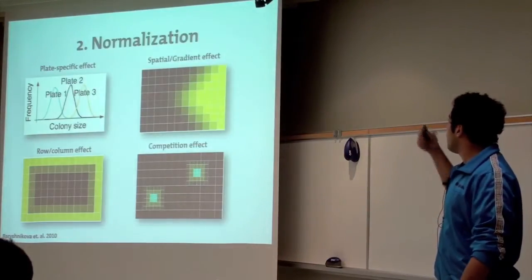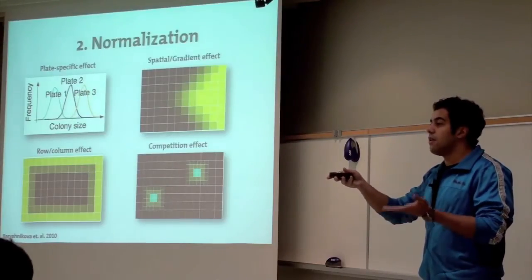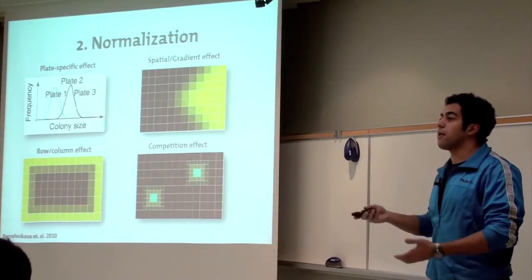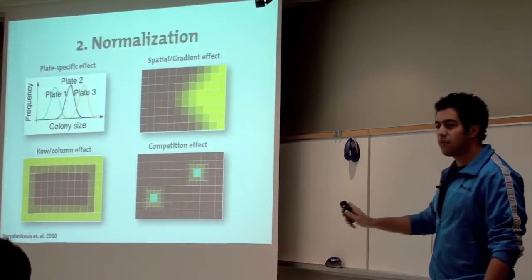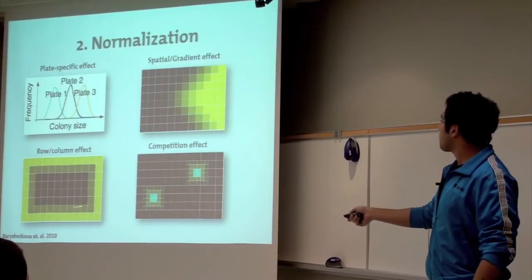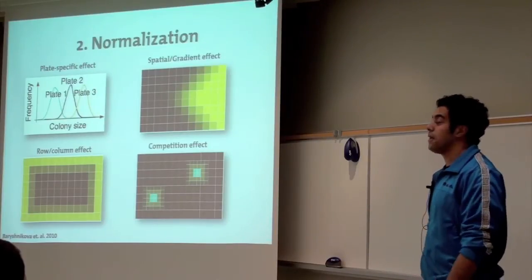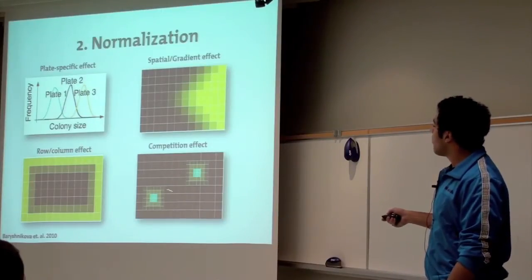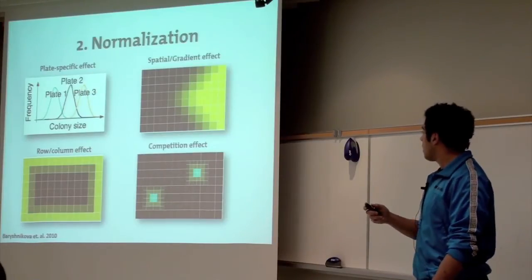You get nutrition based effects like spatial or gradient effects where you might have a screen on a tilt or something, so you get a gradient in nutrients and so some colonies are growing bigger than others. You have this row column effect where the colonies on the border are growing more because they have more access to nutrients, so there's not that much competition. And then you also have this competition effect where if you have small colonies here, you have larger colonies around it because, again, they have more access to nutrition as compared to the ones in the middle.